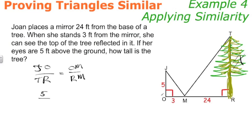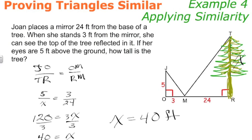TR is what we're trying to solve for, X. OM is 3. And RM is 24. Now we solve the proportion with the cross products property. 24 times 5 is 120. X times 3 is 3X. Dividing both sides of this by 3. 120 divided by 3 is 40. And 3X divided by 3 is X. So what we conclude here is that the height of the tree is going to be 40 feet. So there's how you use similarity in a real world problem solving situation.